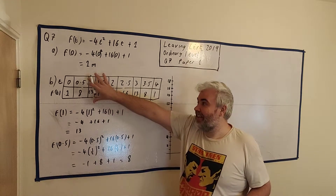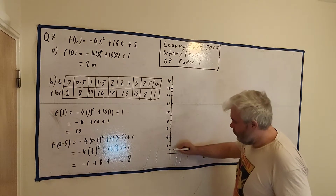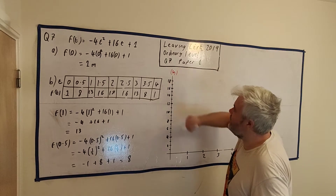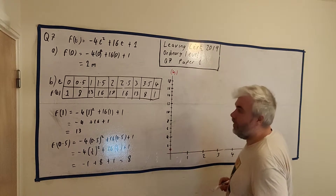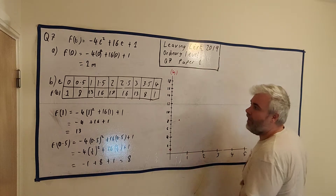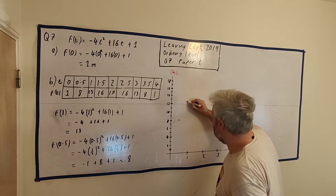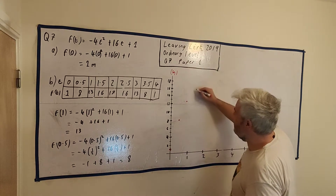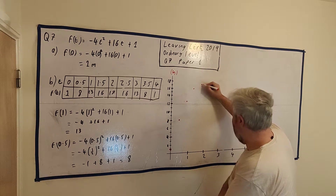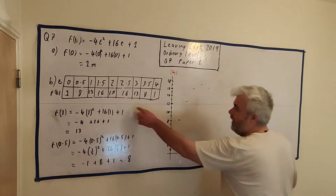They'll ask you to fill out numbers and then ask you to draw a picture. So we need to draw this graph. At t = 0, the height is 1 — we put in a dot. At t = 0.5, the height was 8. At t = 1, the height was 13. At t = 1.5, it is 16. At t = 2, it's 17. At t = 2.5, it's 16 again. At t = 3, it is 13 again — you might notice the symmetry there.